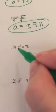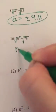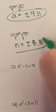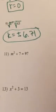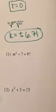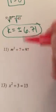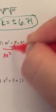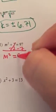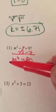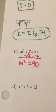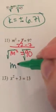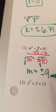n squared is by itself, square root both sides: n equals plus or minus 8.83. On number 11, I can actually subtract that 7 over. We get m squared — that cancels — equals 90. Nothing I can multiply or divide by, so now I'm going to square root both sides, so m equals plus or minus 9.48.